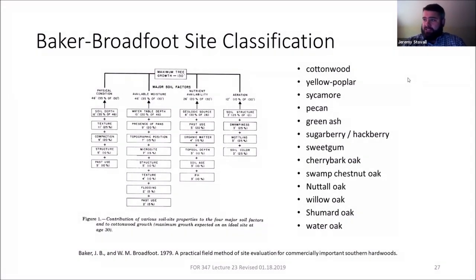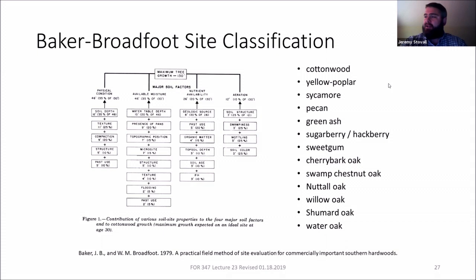Baker-Broadfoot was developed by two experts who went all over the South. It's really focused on the Mississippi Alluvial Valley and may not technically apply in East Texas, but it's the best tool we've got. They dug a lot of holes and put together an expert system. You dig a soil pit and take a multiple choice test for the species you're interested in. That test addresses physical condition, available moisture, nutrient availability, and aeration — the soil properties most tied to tree growth.